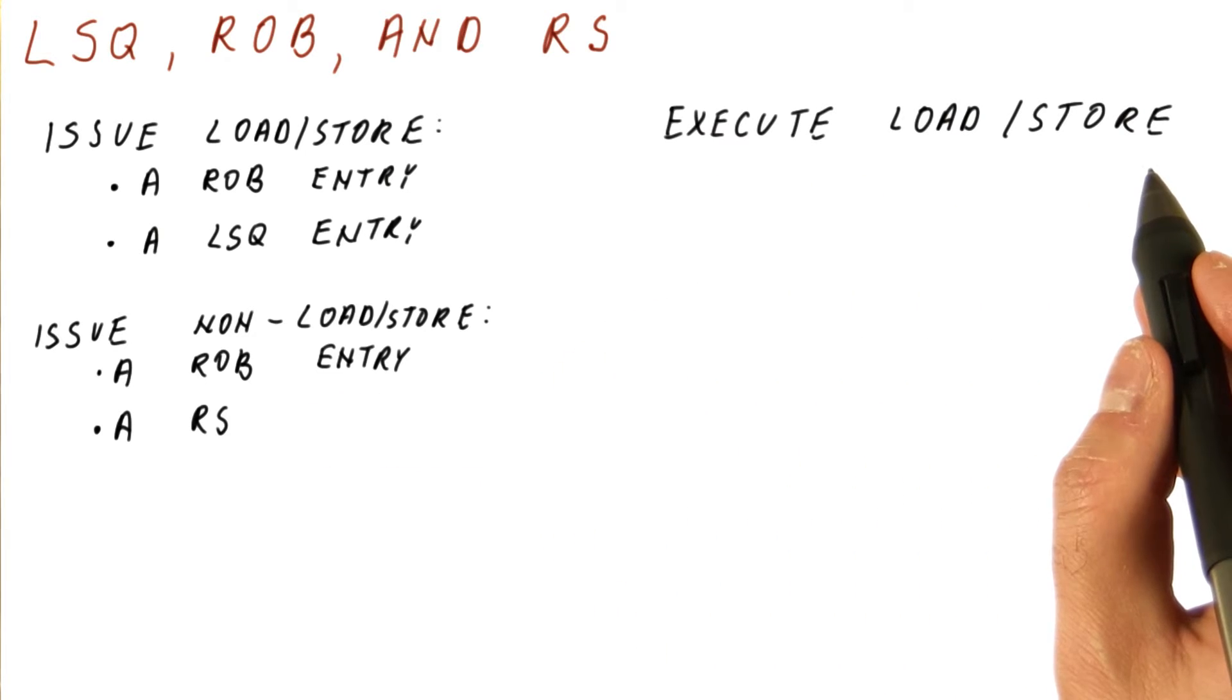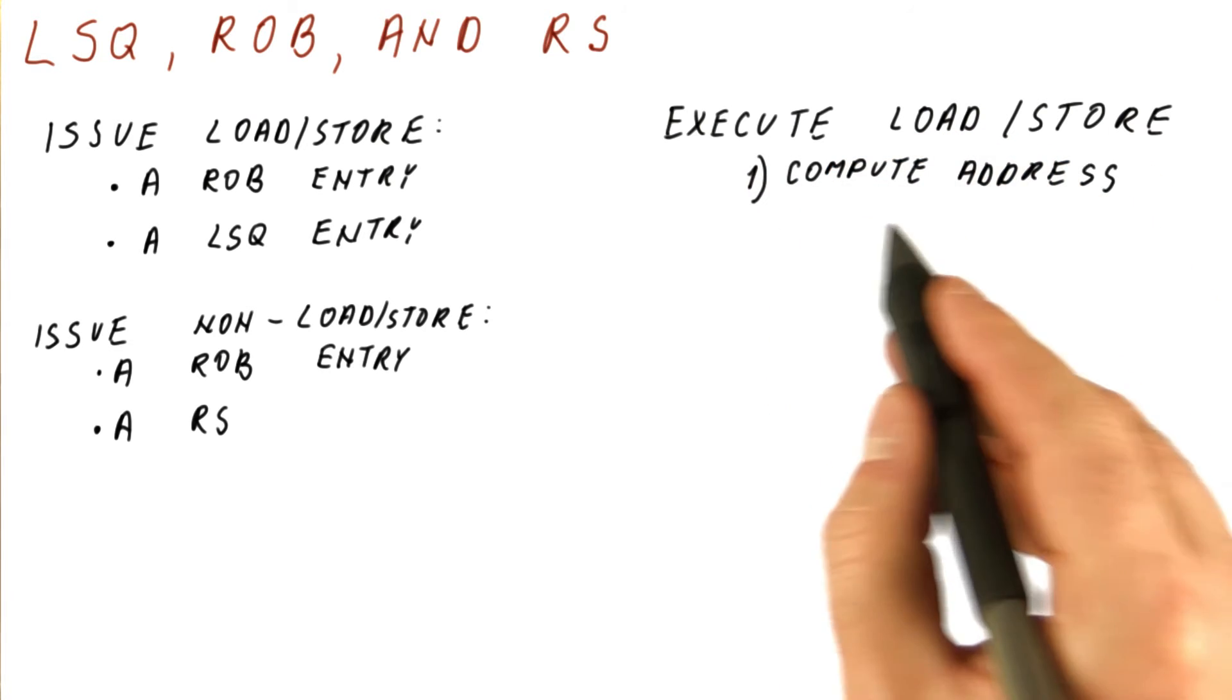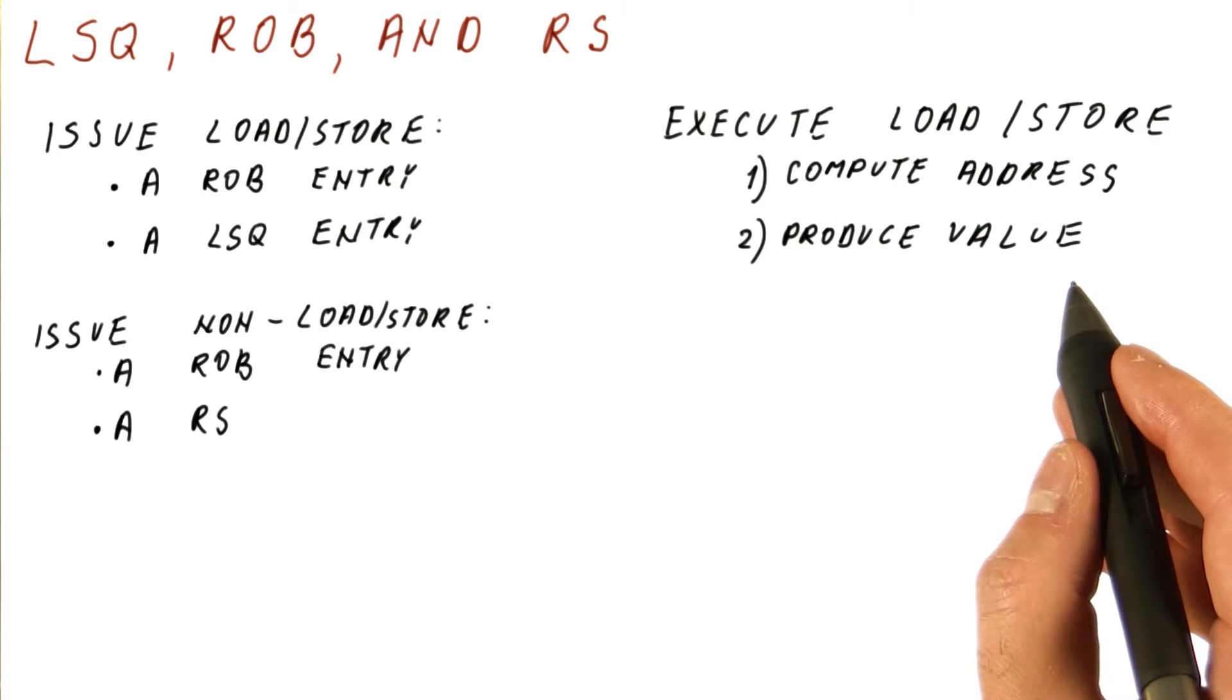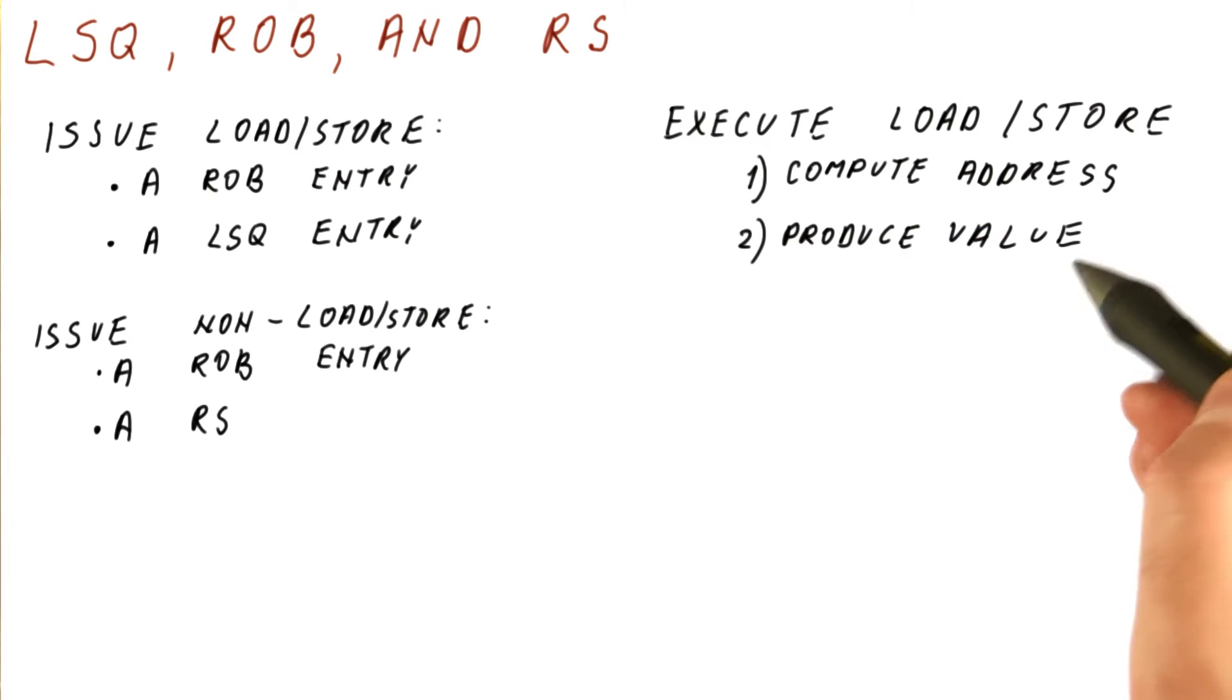When we execute a load store instruction, there are two parts to that execution. First, we need to compute the address. Second, we need to produce the value. For a load, we first compute the address, then get the value from memory. For a store, this can happen in any order. We are computing the address while also trying to obtain the value of the register that we need to store to memory.